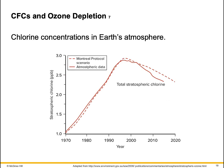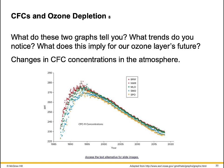Here's a graph showing the chlorine concentrations in Earth's atmosphere, along with the changes in CFC concentrations over time, measured in parts per thousand. What do these two graphs tell you? What trends do you notice? What does this imply for our ozone layer's future?